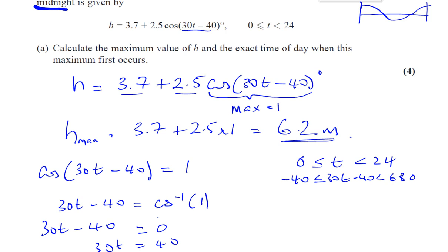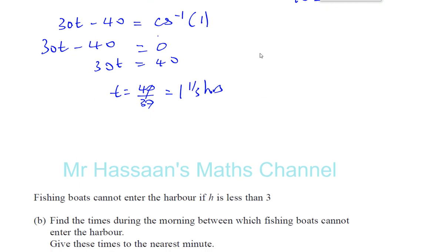And it's telling us to find the exact time of day. So midnight is 0, 0. So it's going to be 0, 1, and 1 third of an hour. 1 third of an hour is 1 third times 60, which is 20 minutes. So it's 1, 20 in the morning. 0, 1, 20. You can write that as your answer, or you can write 1, 20 a.m. as your answer. So both of those are perfectly acceptable.